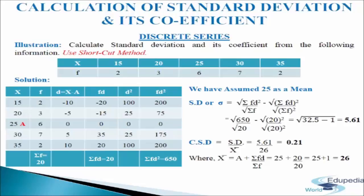Now we calculate SD using the formula: the square root of sigma fd square divided by sigma f minus the quantity sigma fd divided by sigma f, squared. Putting in the values, we get 5.61 as SD. For CSD, we first calculate mean: mean equals a plus sigma fd divided by sigma f, which is 25 plus 20 divided by 20, giving 25 plus 1 equals 26. So CSD equals 5.61 divided by 26, giving 0.21. This is how we calculate standard deviation using the shortcut method.